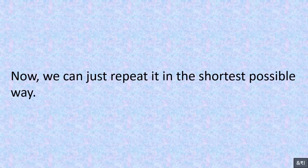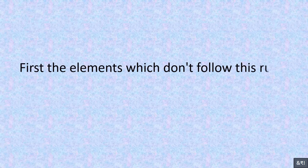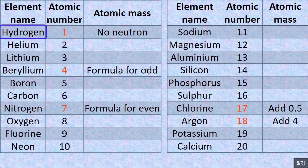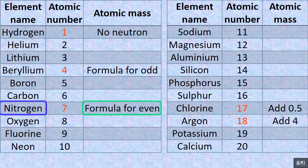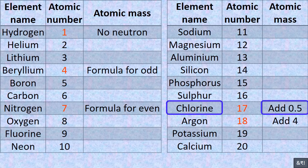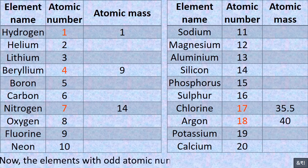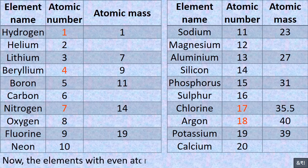Now we can repeat it in the shortest possible way. First, the elements which don't follow this rule — they are elements with atomic number 1, 4, 7, 17 and 18. Hydrogen: no neutron. Beryllium: use formula for odd. Nitrogen: use formula for even. Chlorine: add 0.5. Argon: add 4. For the elements with odd atomic number: 2 multiplied by atomic number plus 1. For the elements with even atomic number: 2 multiplied by atomic number.